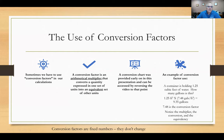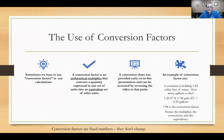A little bit about conversion factors. A conversion factor is an arithmetical multiplier. Remember that table — you always multiply by the conversion factor; you never divide. It converts a quantity expressed in one set of units to an equivalent set of other units without changing the actual value. For example, if you have a container holding 1.25 cubic feet of water and every cubic foot equals 7.48 gallons, multiply 1.25 by 7.48 to get 9.35 gallons. The conversion factor 7.48 never changes.